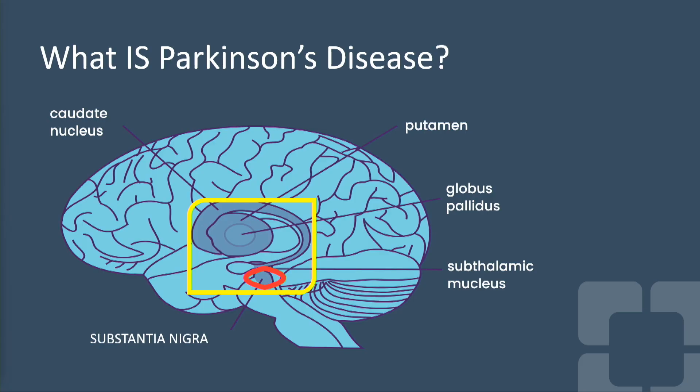So what is Parkinson's disease? Parkinson's disease happens when in a certain area of the brain we have a loss of neurons, and that area of the brain is called the basal ganglia. Within this yellow rectangle, that dark structure represents the basal ganglia, and the little red circle is the substantia nigra.